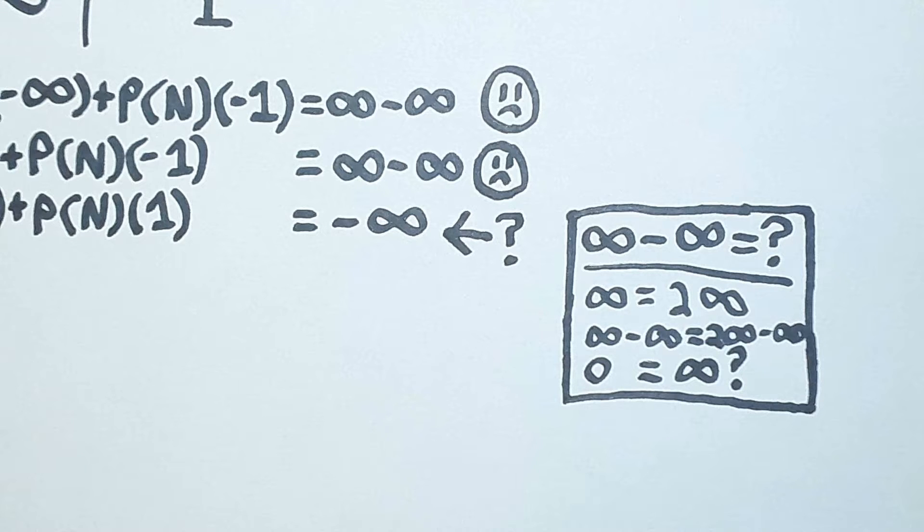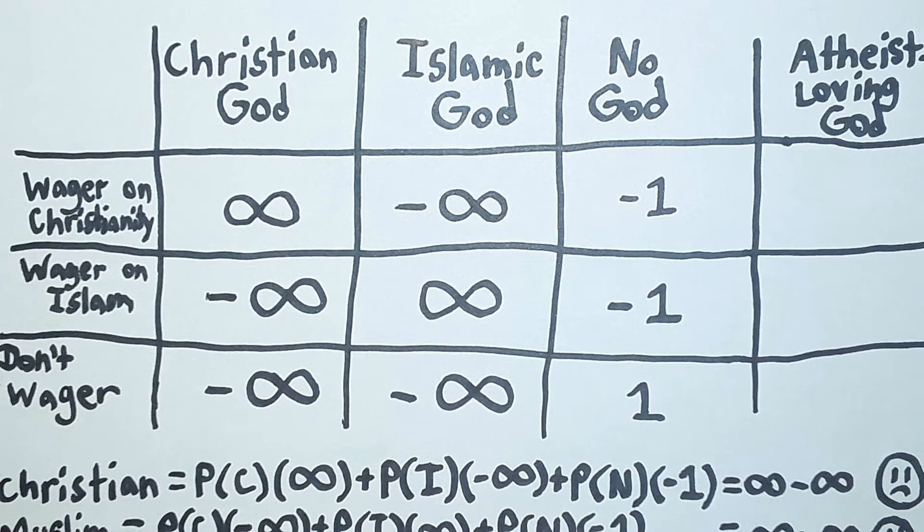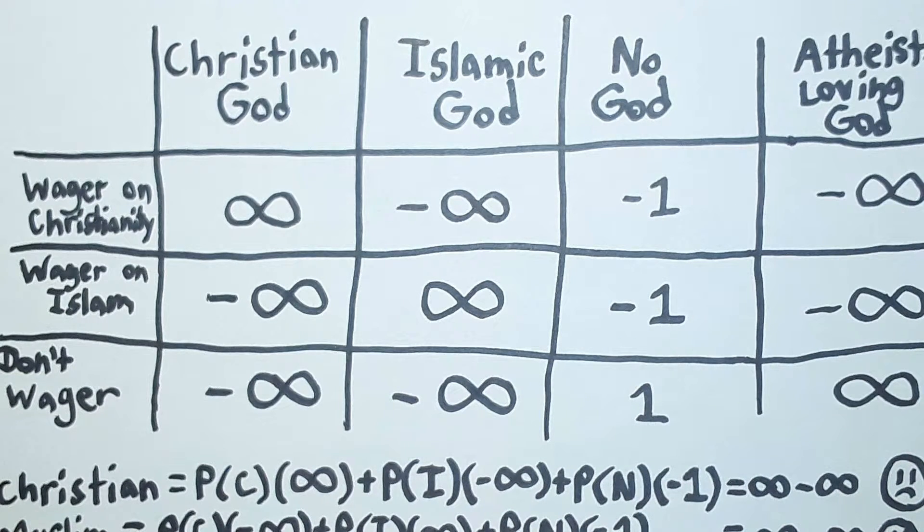But there's a problem. We can imagine a god who will send all atheists who refrain from wagering on god to heaven, and this god will also send all theists to hell, for whatever reason. The probability that there is such a god is ridiculously tiny, but I see no reason to assign it a probability of zero. There's no contradiction in it or anything.